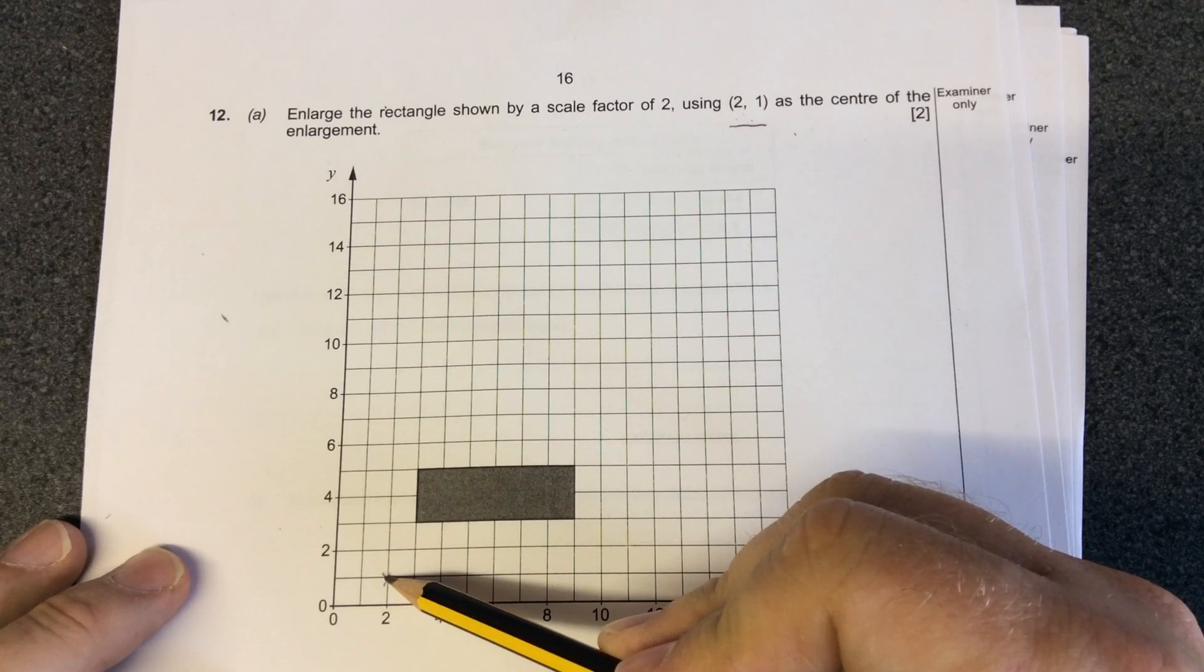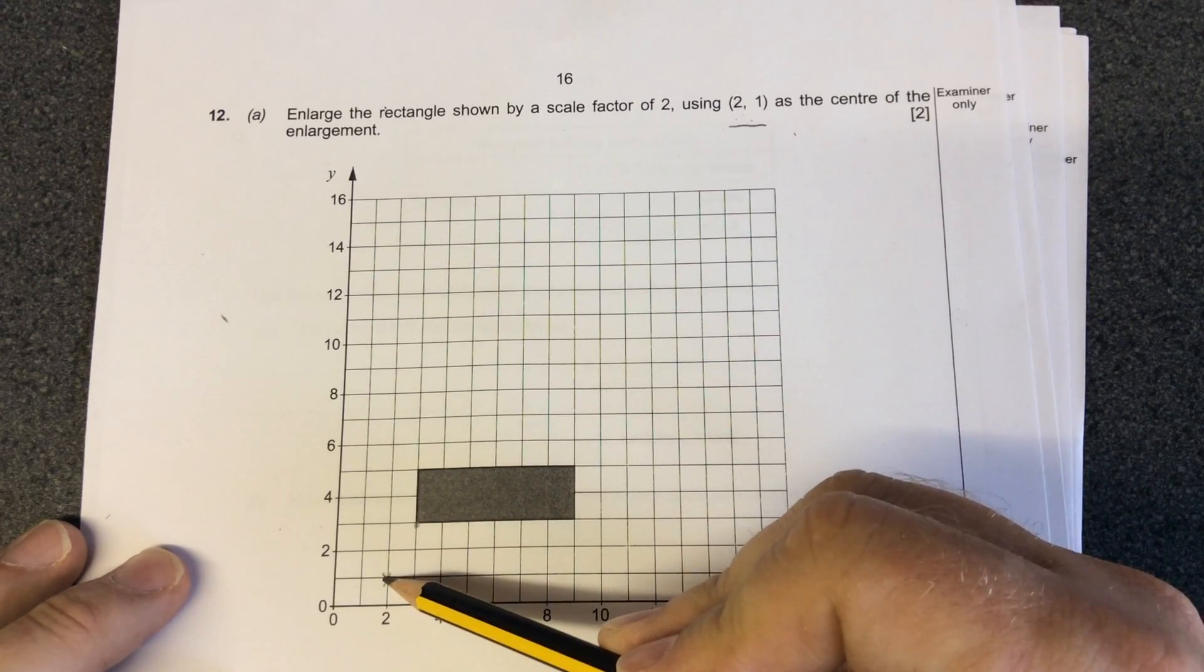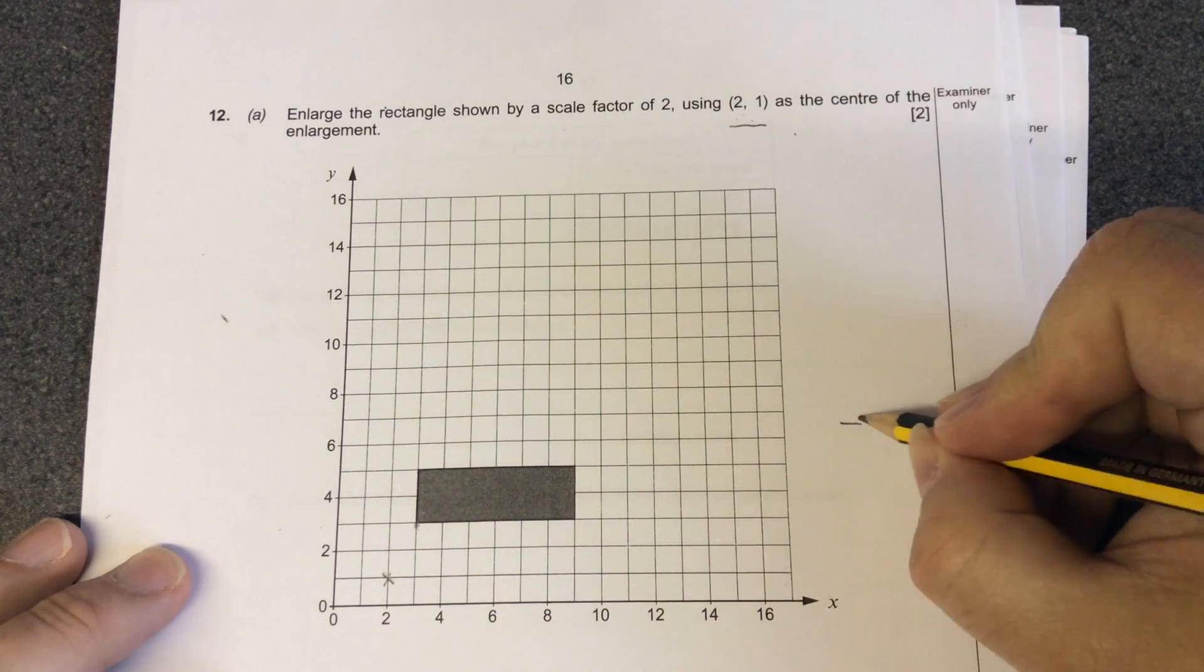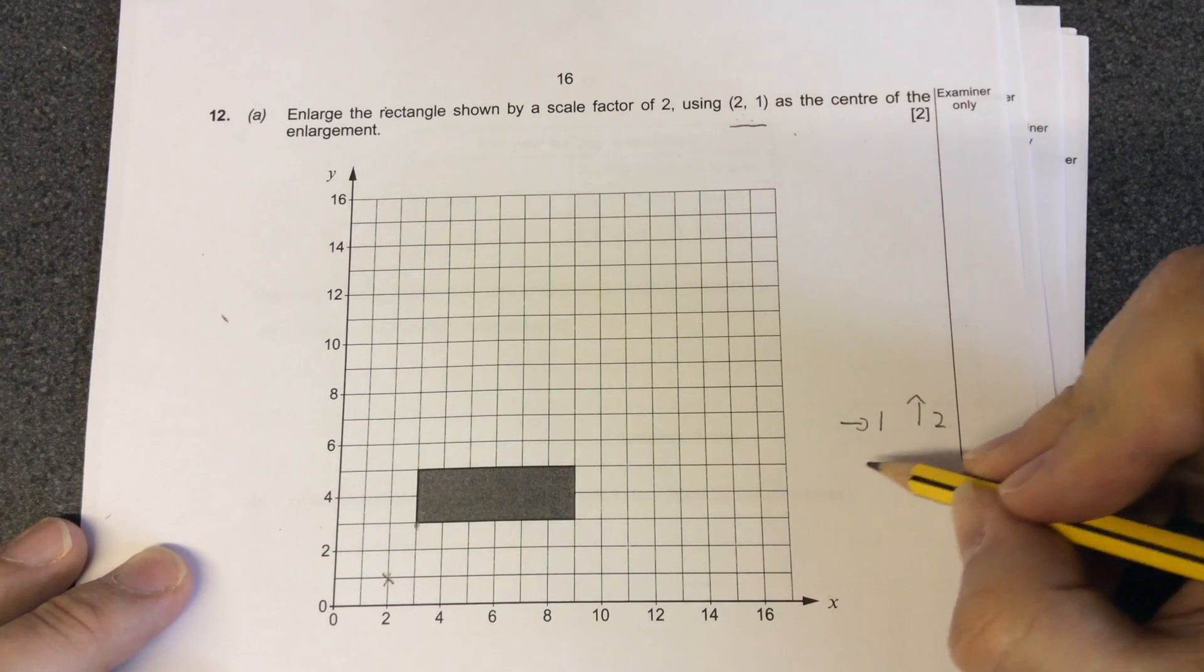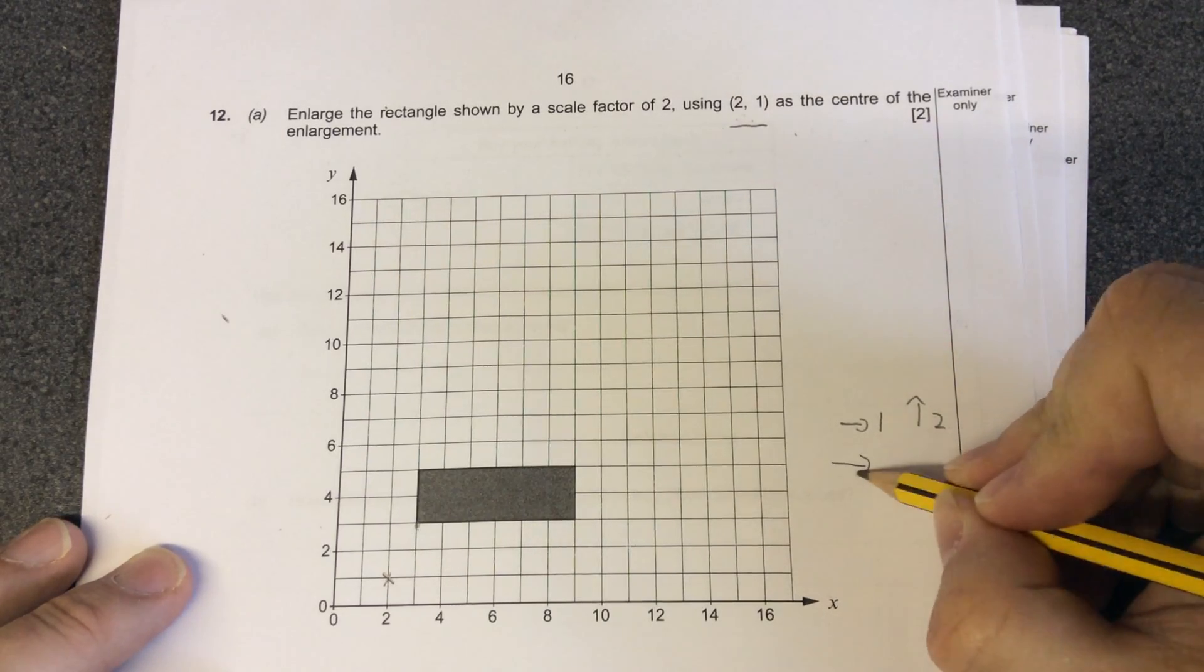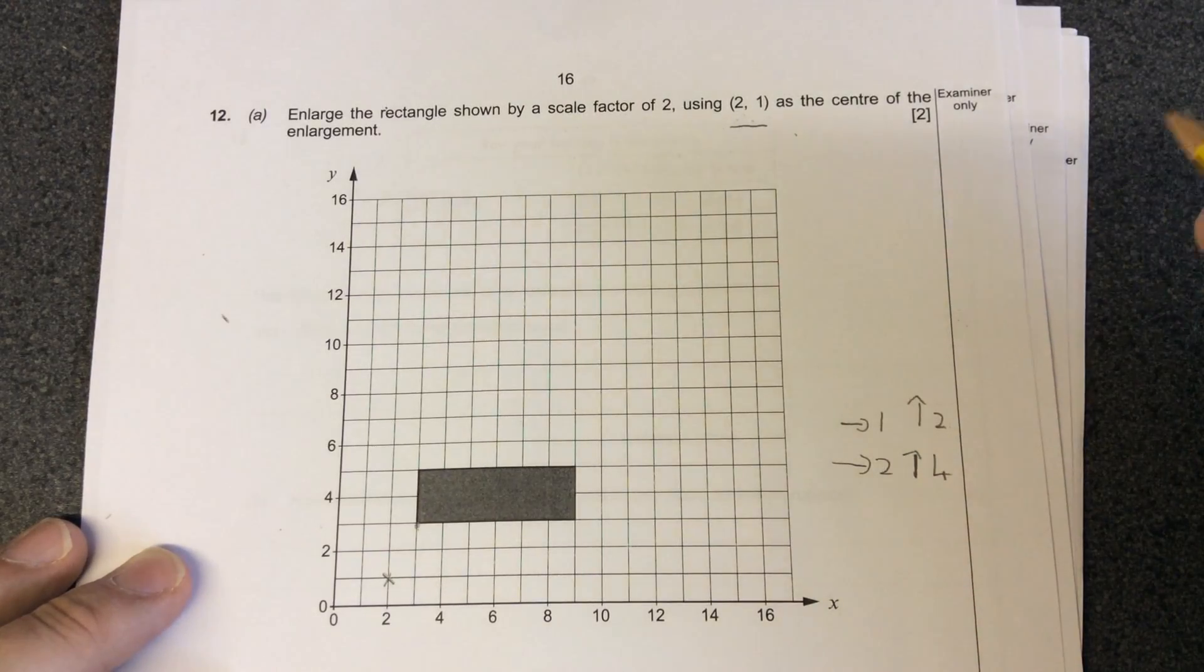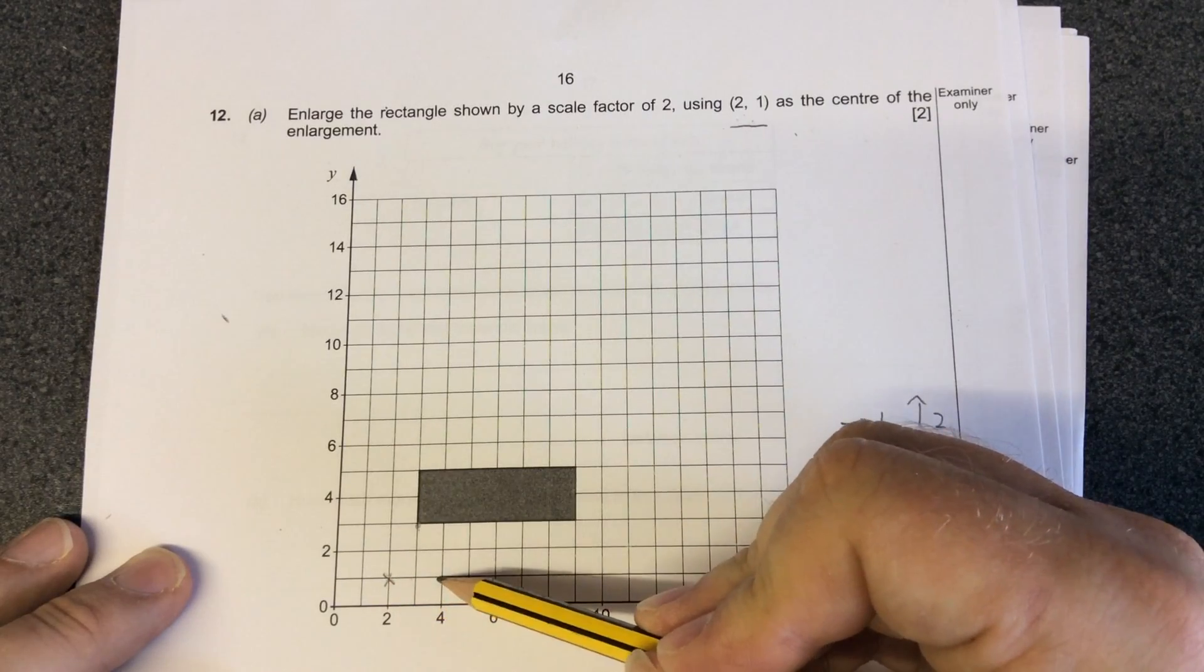If you're looking at the position here of the first coordinate, from 2, 1, you're moving across 1, up 2. So you're going across 1, up 2. When we're looking across 1, up 2, to make it twice as big, you're going across 2 and up 4. So when you're going across 2 and up 4 from that point, you're going 1, 2, and up 4.